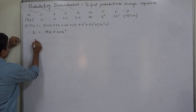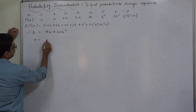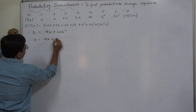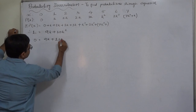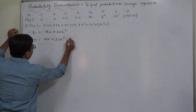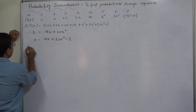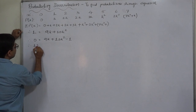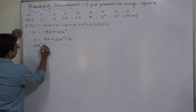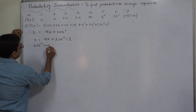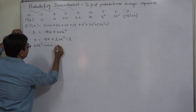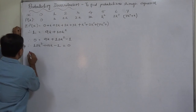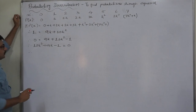Therefore, 0 equals 9K plus 10K squared minus 1. Let us arrange in order: 10K squared plus 9K minus 1 equals 0.